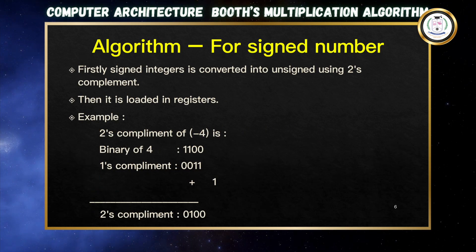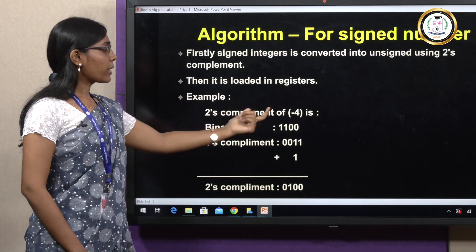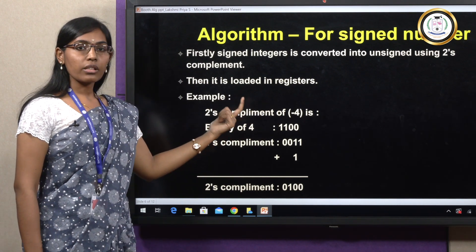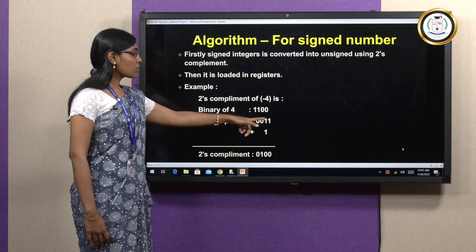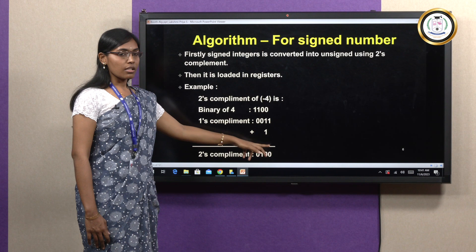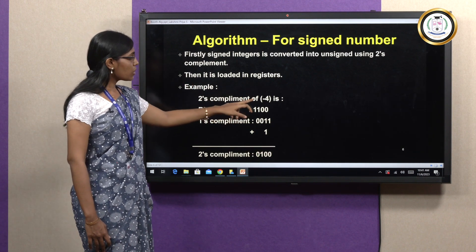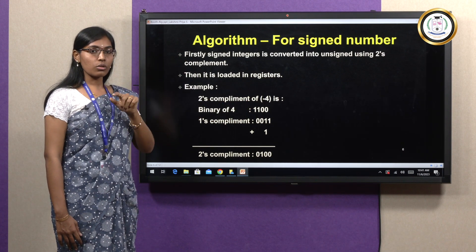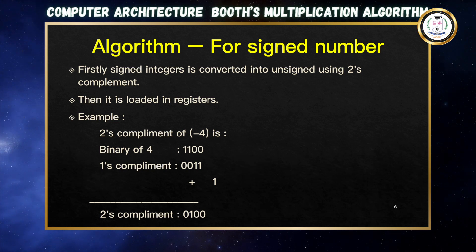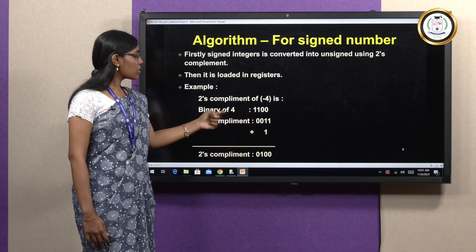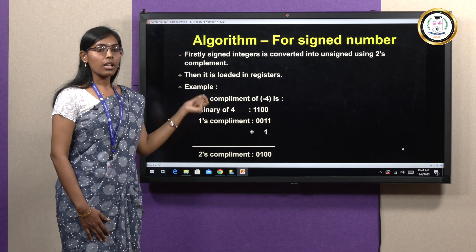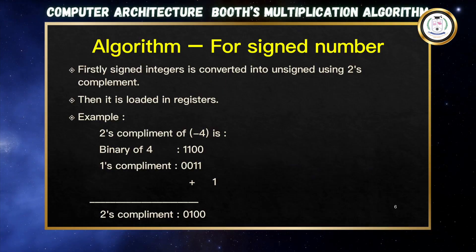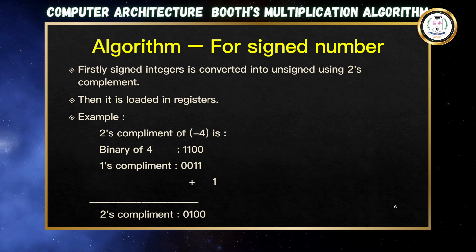For a signed number, convert it to 2's complement. For example, for -4: the binary of 4 is 0100. Taking the 1's complement gives 1011. Adding 1 gives the 2's complement: 1100. The 1's complement is obtained by converting 0s to 1s and 1s to 0s, and the 2's complement is obtained by adding 1 to that result, with carries propagated accordingly.